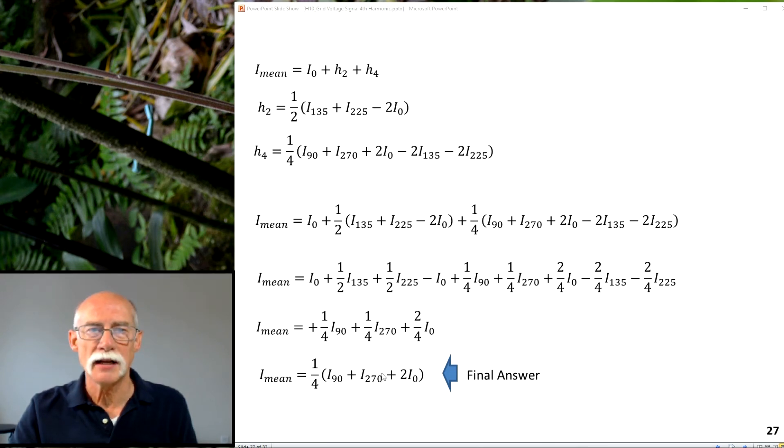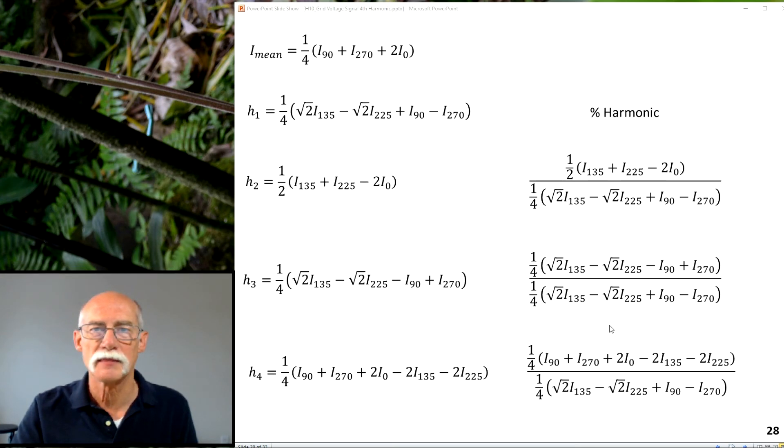I mean then, rather than leave it in terms of H2 and H4, I substitute those newly found terms into it. So I now have H mean in terms of current values. So this is what I end up with. So here's I mean, H1, H2, H3, H4. Here are the percent harmonics that you can calculate, or rather these are.